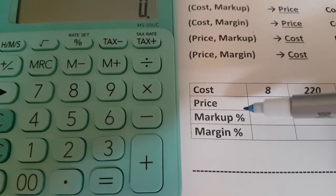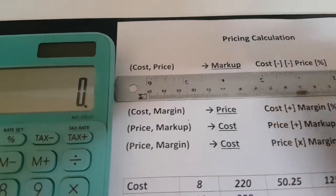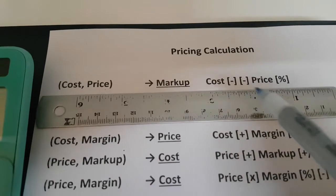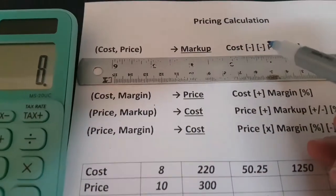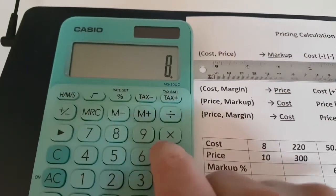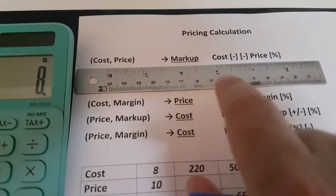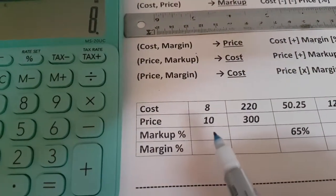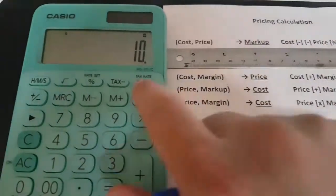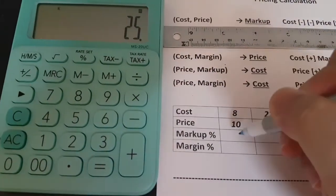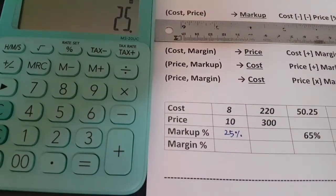For this example, cost is 8 and price is 10. You know cost and price, so you use this step here. Press the same steps as shown — minus, minus — then the price locator, then price which is 10, and then percent. The first answer is 25 percent.